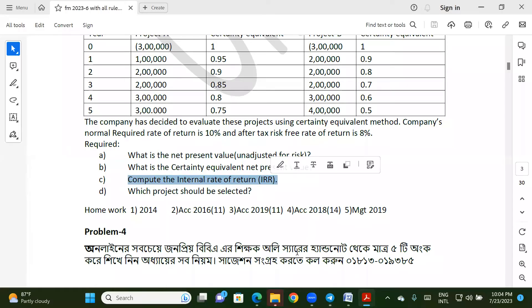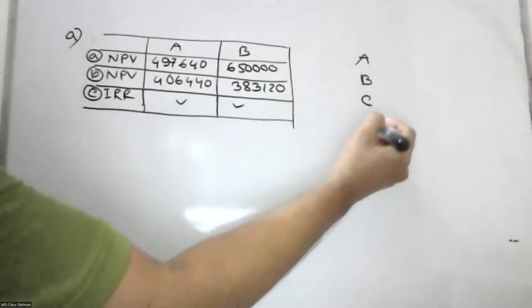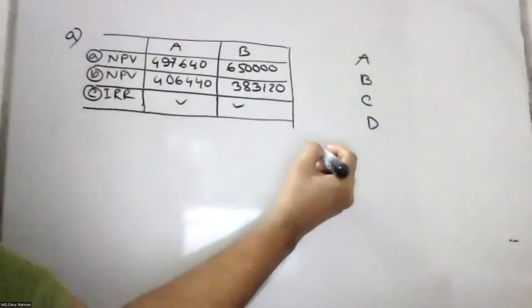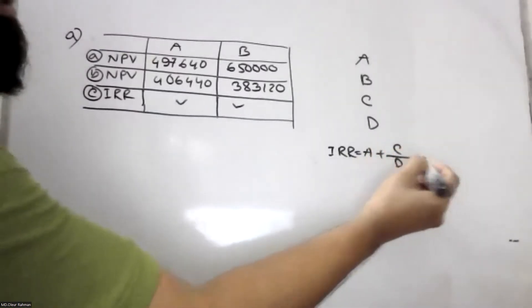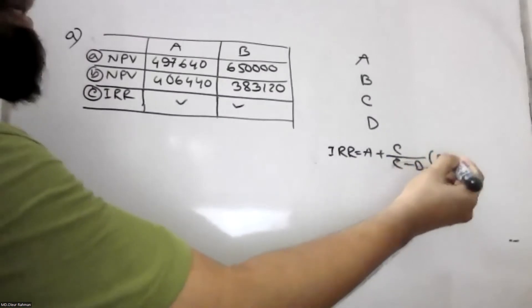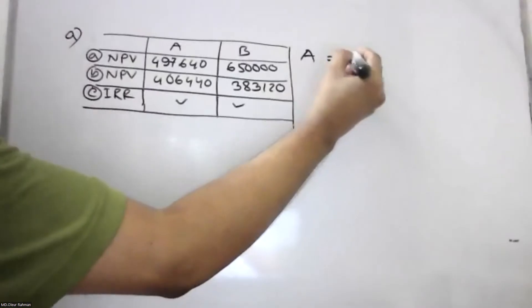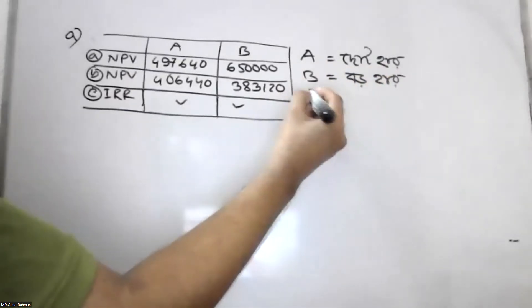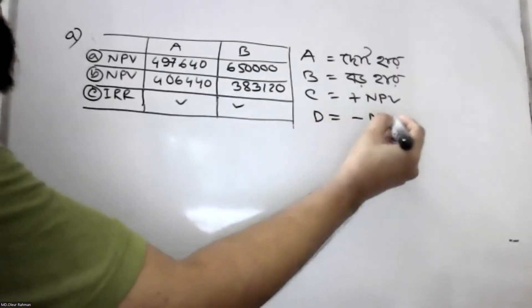So, the special features are A, B, C, D. If you want to get a special feature, you can give me A, B, C, D. The IRR formula: A plus C, D minus C minus D, D minus A — the agreement gives positive NPV and negative NPV.